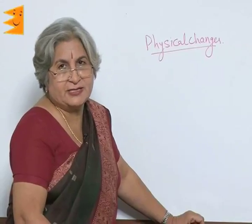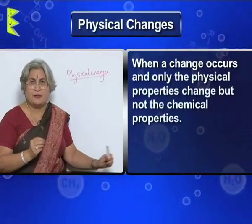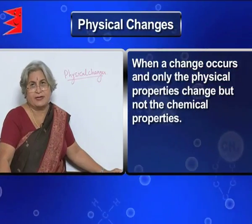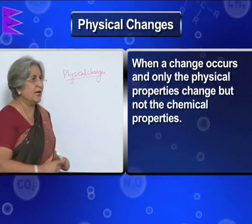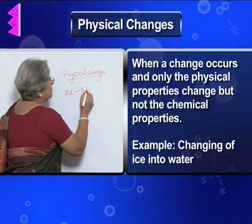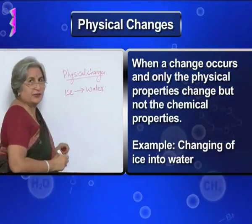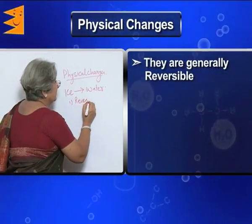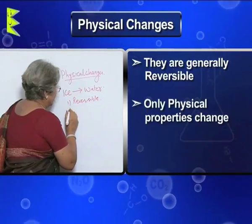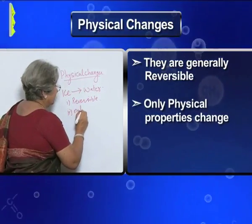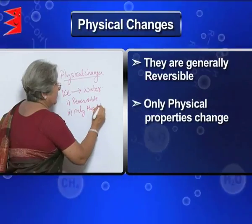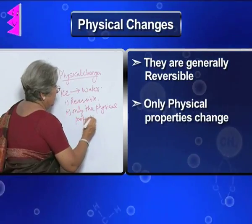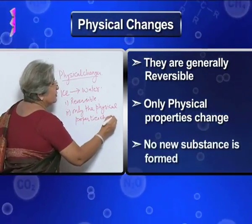What are physical changes? When a change occurs and only the physical properties change — not the chemical composition or chemical properties — it is called a physical change. Like when ice changes to water, it is a physical change. Usually these changes are reversible, only the physical properties change, and no new substance is formed.